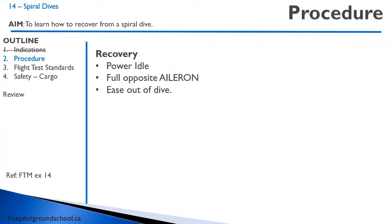You need to recognize a spiral dive. The recovery is: power idle, full opposite aileron — remember, a spin uses the rudder, a spiral dive uses the aileron — and then ease out of the dive. These are all done in rapid succession but are three distinct stages: power comes to idle, then the aircraft is rolled level with the ailerons rapidly, and then you ease out of the dive — not all at once.